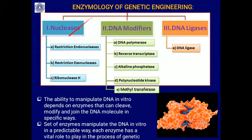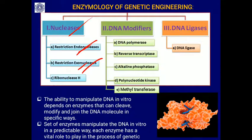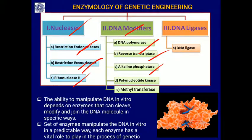The main enzymes used are nucleases — enzymes that can precisely cut nucleotides. Restriction endonucleases can cut or break the phosphodiester bond present between nucleotides. Exonucleases remove nucleotides from the five prime or three prime side. Ribonucleases cut RNA. DNA modifiers include DNA polymerase to amplify DNA, reverse transcriptase to convert RNA to DNA, alkaline phosphatase, methyl transferases that add methyl groups, and DNA ligases that join DNA fragments.